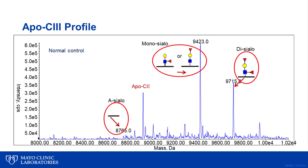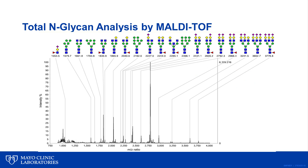Usually the most abundant APOC3 form is the monosyalo, and the disyalo will be about 50 to 70 percent of the peak height of the monosyalo. In abnormal glycosylation this ratio becomes lower. Also, asyalo/aglycan APOC3 is usually less than 10 percent of the disyalo APOC3, and in abnormal glycosylation this fraction tends to become higher, so we say the hypoglycosylated APOC3 is elevated. Total N-glycan analysis by MALDI, as performed in the OCDG-N assay, is a global assessment of glycosylation.